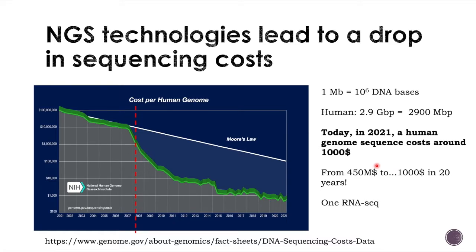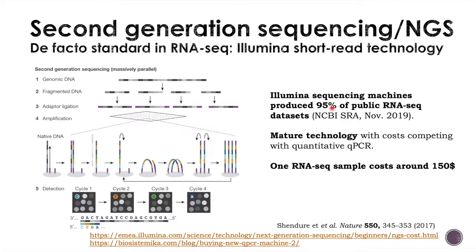For the human genome, which is around 2,900 megabase pairs, while it cost around half a billion dollars in the early 2000s, it now costs around $1,000 — going from half a billion to $1,000 in around 20 years. For RNA-seq, this also resulted in a drop in costs. The Illumina short-read technology has become the de facto standard for RNA-seq, and around 95% of all public RNA-seq datasets in the NCBI Sequence Read Archive were produced using Illumina. This mature technology now has costs competing with quantitative PCR, at around $150 per sample.